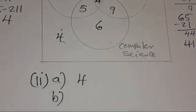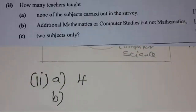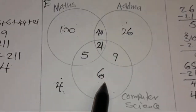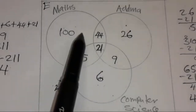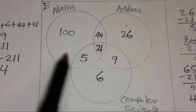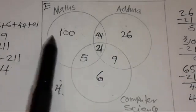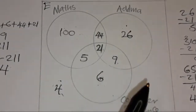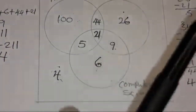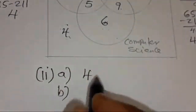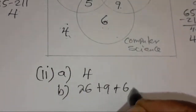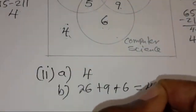Part B: how many teachers taught additional mathematics and computer science, but not mathematics? The Maths set is excluded — it's a complement. So we add the values in ADMA and CS that exclude Maths: 26 plus 9 plus 6, which gives 41 teachers.